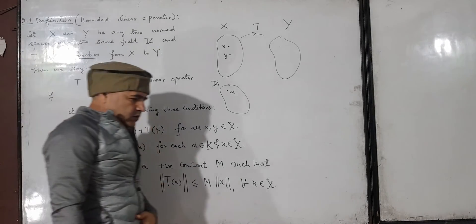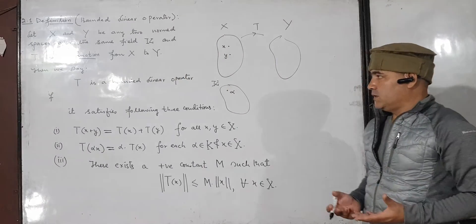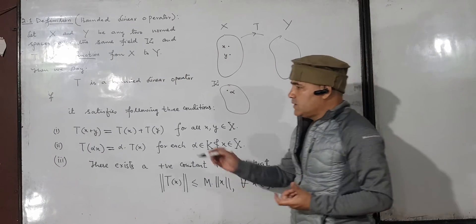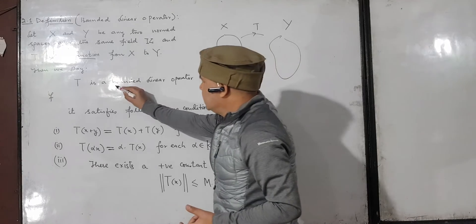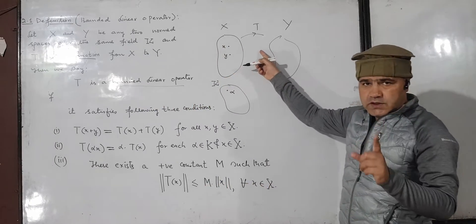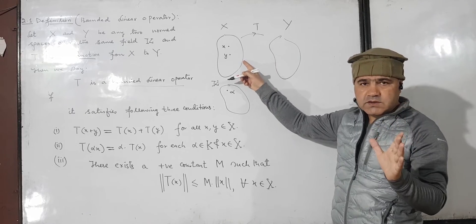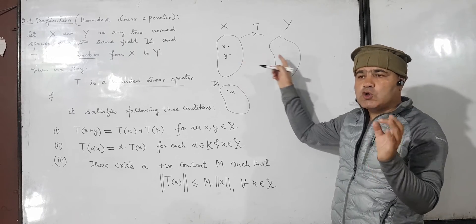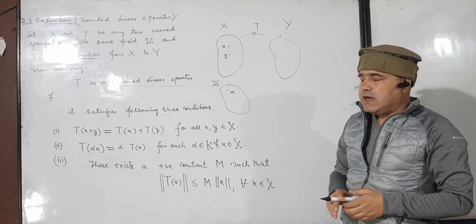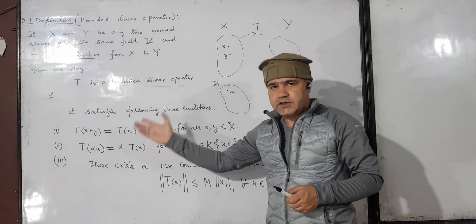So what is then a bounded linear operator? A bounded linear operator is a function T whose domain is a norm space, whose co-domain is a norm space, and which satisfies these three conditions.